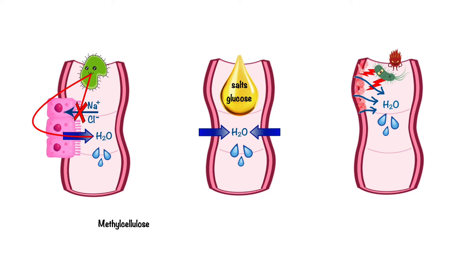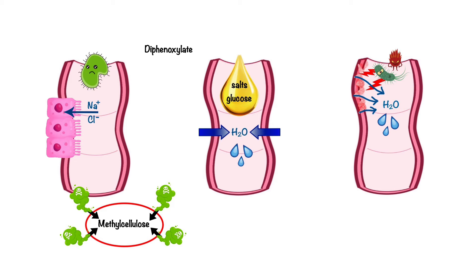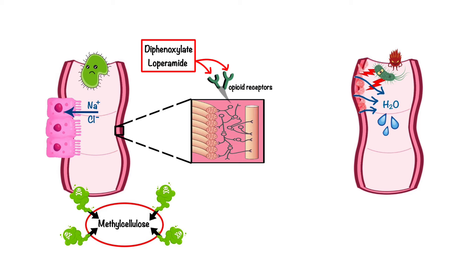And anti-motility agents such as diphenoxylate and loperamide, which work by binding to the opiate receptor in the gut wall to inhibit the release of acetylcholine and prostaglandins. This in turn slows down the movement of intestinal muscle and increases the amount of time it takes for the byproducts of digestion to move through the intestine.